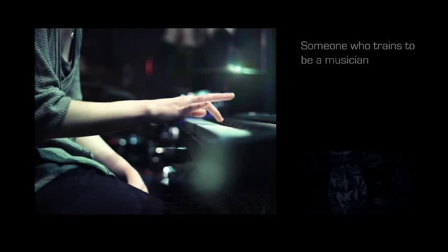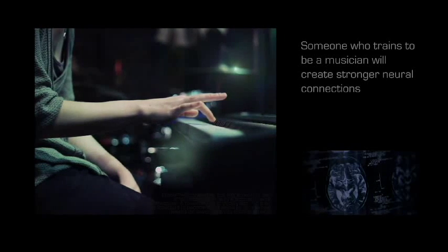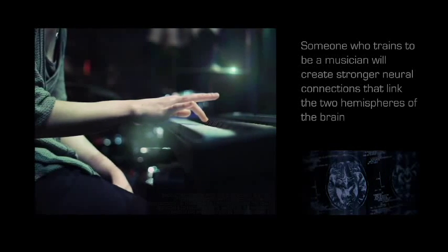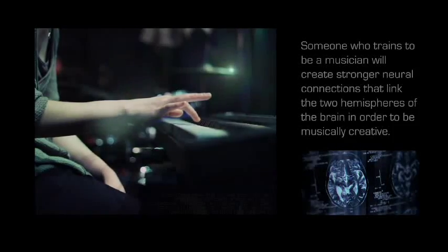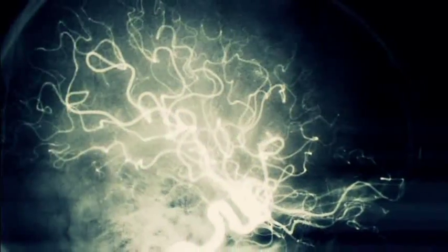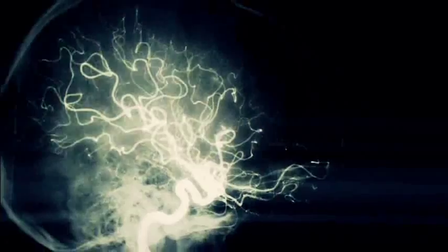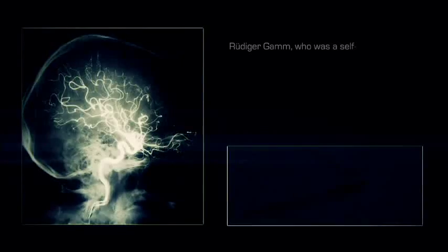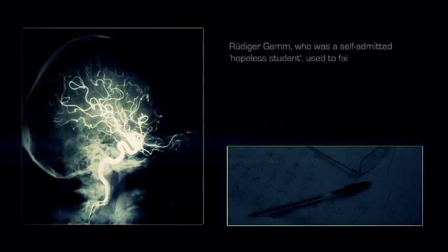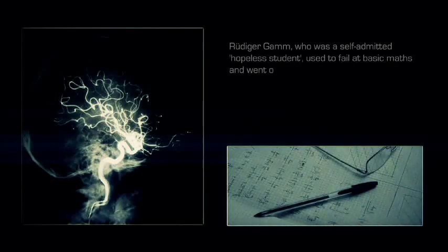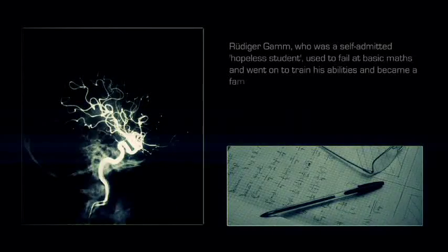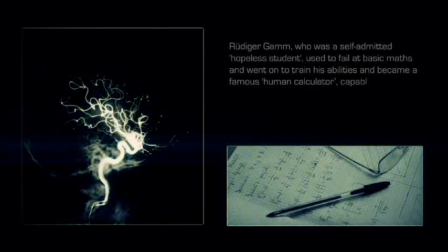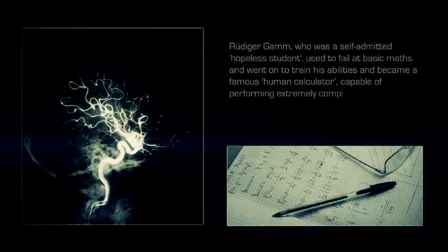Someone who trains to be a musician will create stronger neural connections that link the two hemispheres of the brain in order to be musically creative. Virtually any sort of talent or skill can be created through training. Rudiger Gamm, who was a self-admitted hopeless student, used to fail at basic math and went on to train his abilities and became a famous human calculator capable of performing extremely complex mathematics.